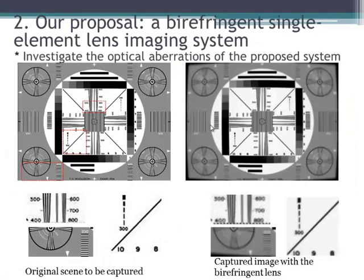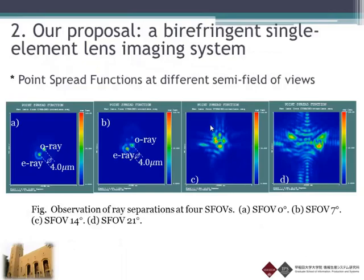This shows the optical aberrations of our imaging system. Here is a two-dimensional object, and this is the resulting image. For a spherical single element lens, we think this image quality is acceptable. We also observed the point spread function of our system. These four pictures show the PSF at semi-field of view 0, 7, 14, and 21 degrees. The ray separation at 0 and 7 degrees is approximately 4.0 micrometers, which is exactly two times the square root of two times the pixel pitch.